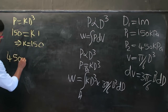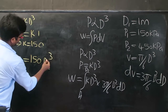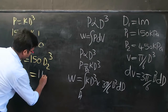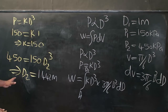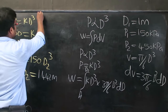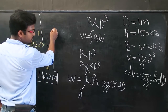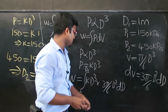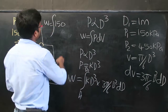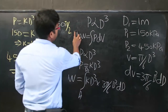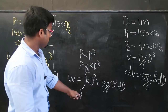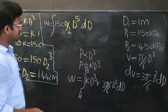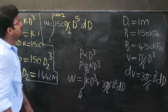To find D2, we use the final condition: 450 = 150·D2³, which gives D2 = 1.442 meters. Substituting back, the integral simplifies to W = 150·(π/2) ∫D⁵ dD from 1 to 1.442.